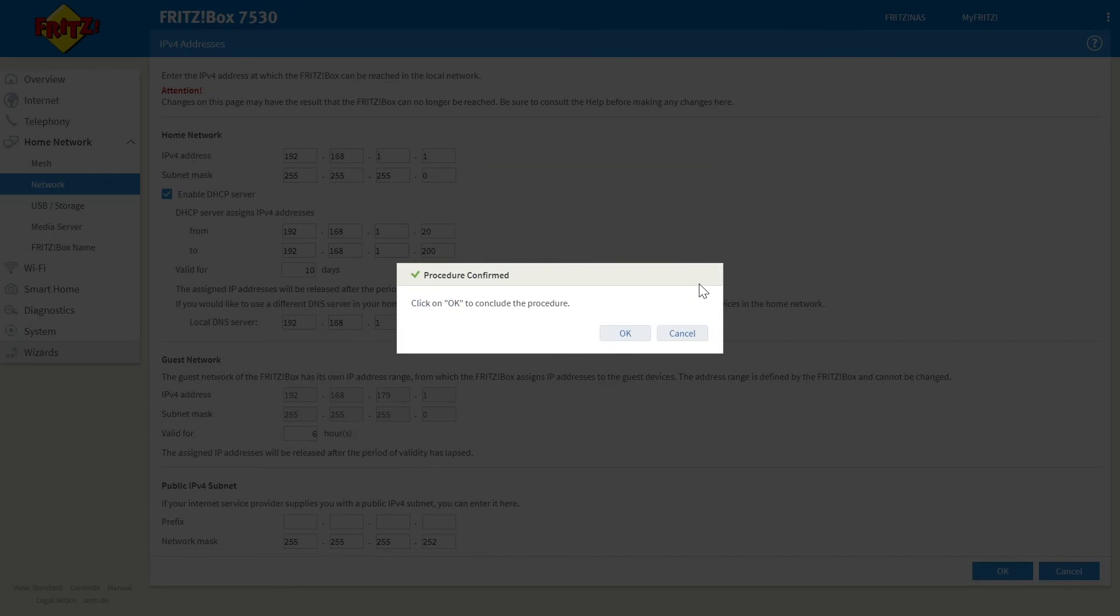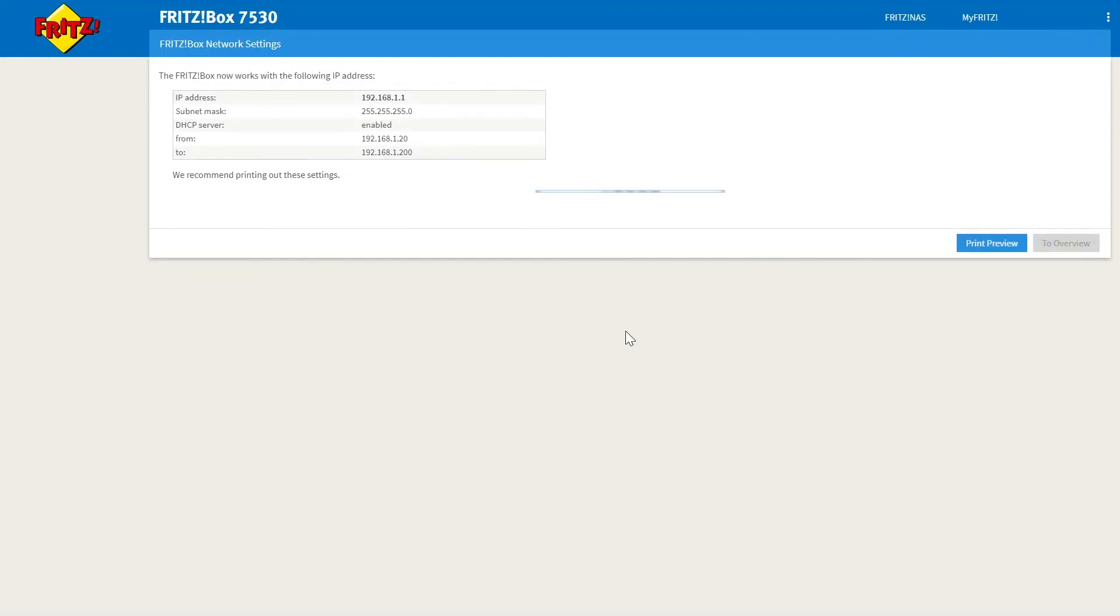Once you have done this you'll be greeted with this window and all you need to do is press OK. The settings will now be applied to your Fritzbox and your gateway will now be changed to 192.168.1.1 or whatever alternative address you have used at this time.